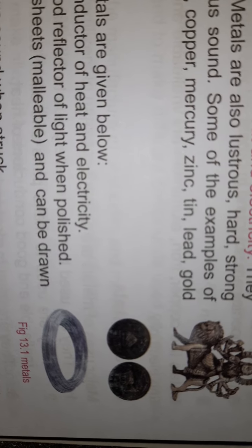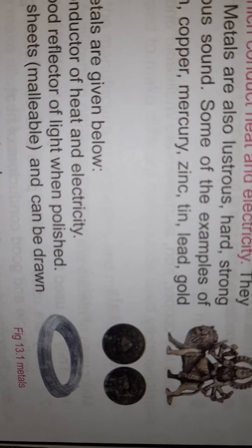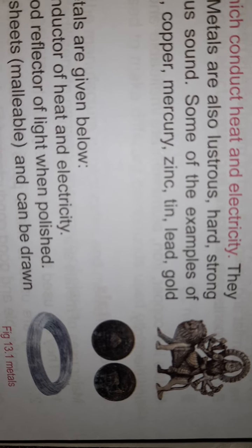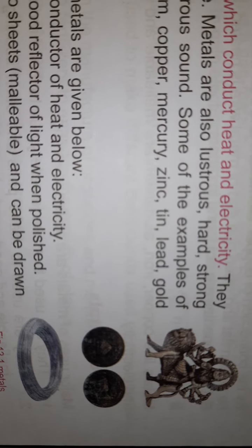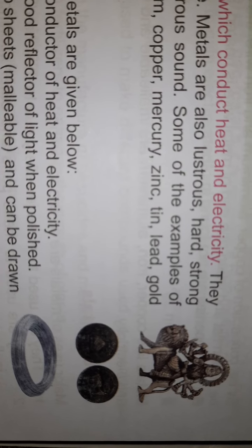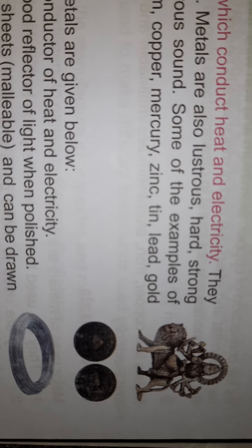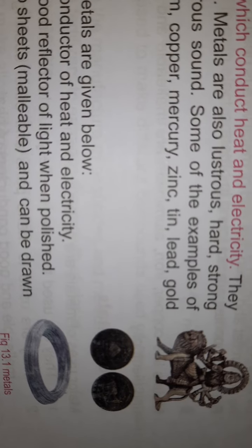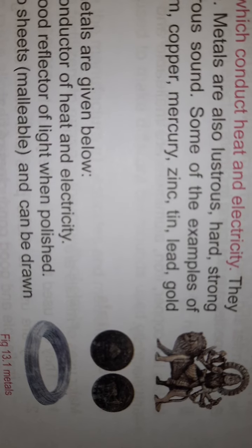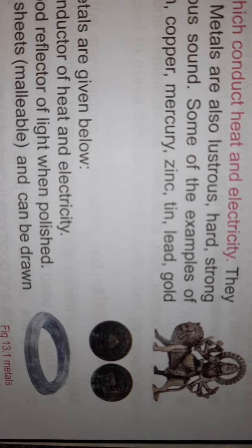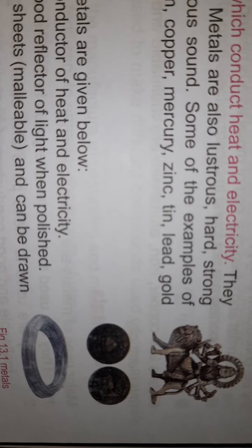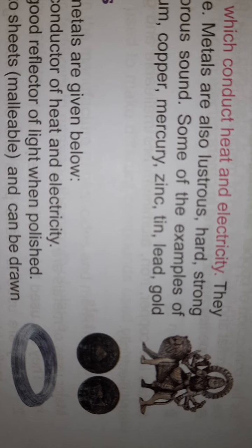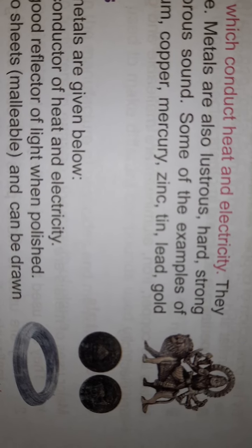Wires are made using the ductility property of metals. Because of ductility, metals can be drawn into wires. Copper can be made into wire, and aluminium wire is also used. These wires are used for normal household wiring and also for bending in construction.